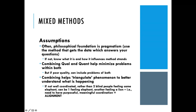Another assumption is that by combining quant and qual you triangulate a phenomenon to understand it better — I use 'triangulate' loosely here to mean looking at it from different perspectives. If not well coordinated, rather than two blind people feeling the same elephant, you could end up with one person feeling an elephant and one feeling a lion — your data collection could be targeted at completely different things. You really need coordination and alignment between your research question and your method.